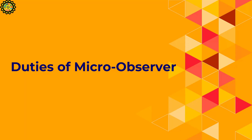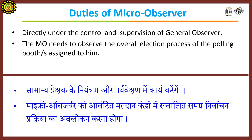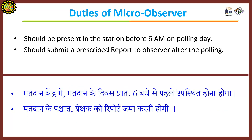Duties of Micro-Observer: The Micro-Observer will work directly under the control and supervision of the General Observer. They need to observe the overall election process of the polling booth assigned to them, be present at the station before 6 a.m. on the day of poll, and submit a prescribed report to the observer after polling.